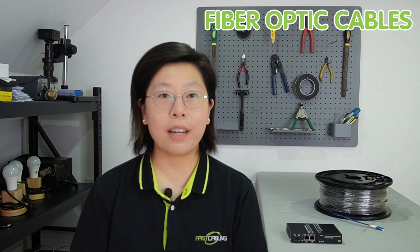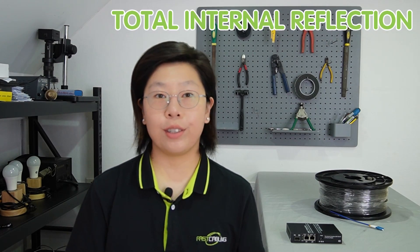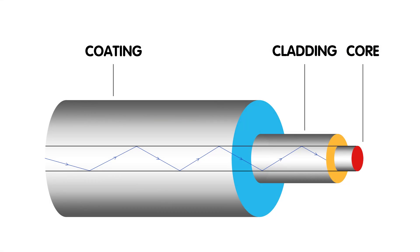The fundamental principle of fiber optic cable involves total internal reflection, where light signals bounce within the core of the fiber, ensuring minimal signal loss over long distances. The core, surrounded by a cladding layer, maintains the integrity of the light, allowing for high-speed and efficient data transmission.